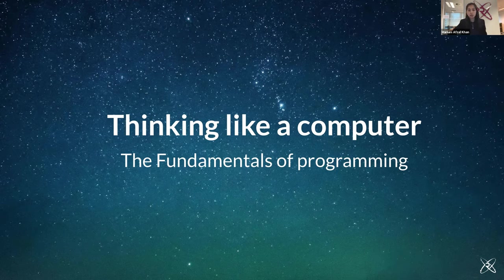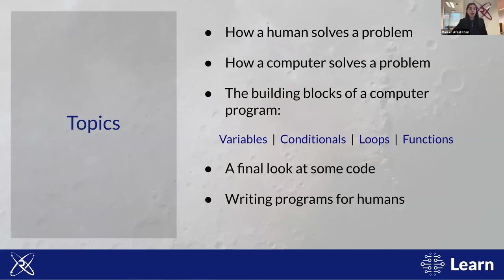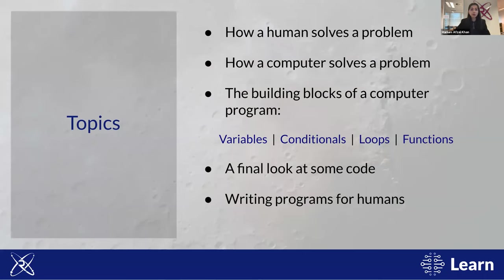Our agenda for today: we'll start with a couple of exercises to see the different ways humans and computers solve problems, giving insight into how a computer breaks down a problem. After those exercises, we'll look at the building blocks of a computer program — variables, conditionals, loops, and functions — explained in terms of thought processes from the exercises. Then we'll look at a basic program in R and Python, and finally discuss how to write programs not just for computers to execute, but also for humans to understand.